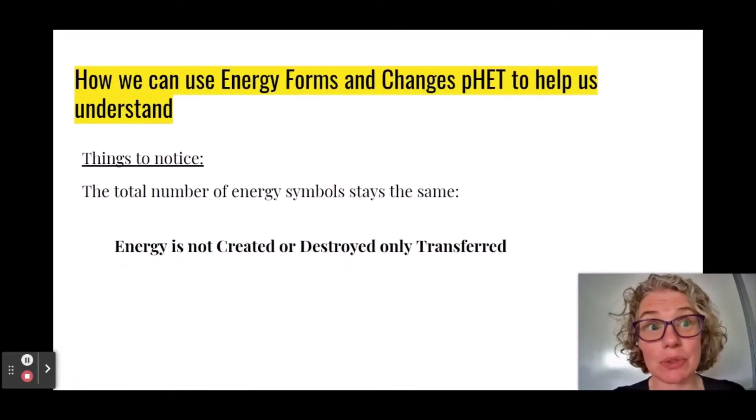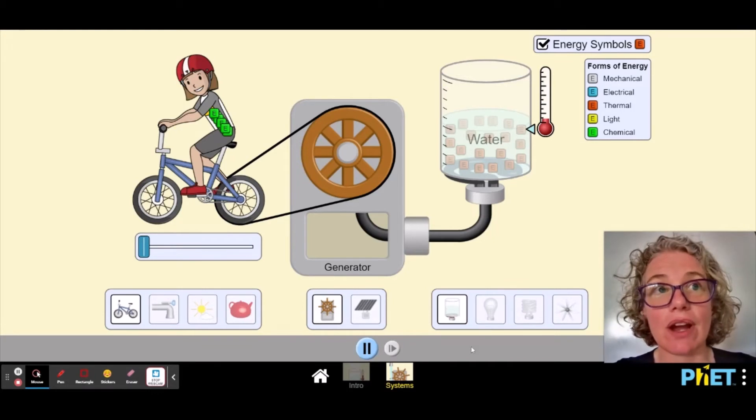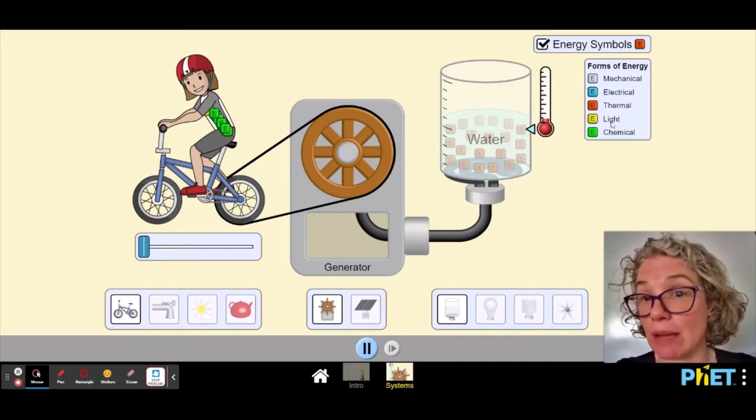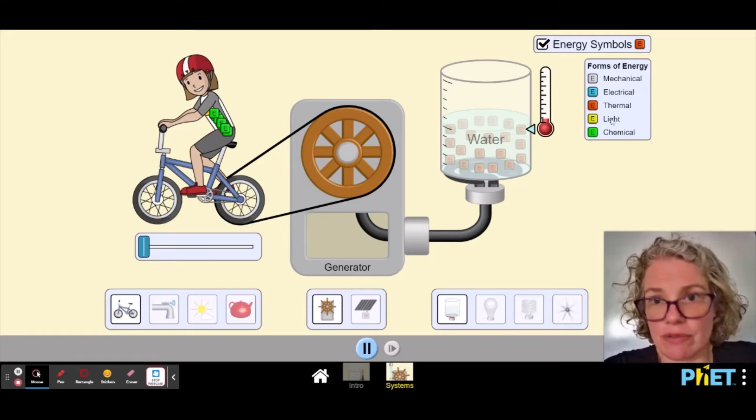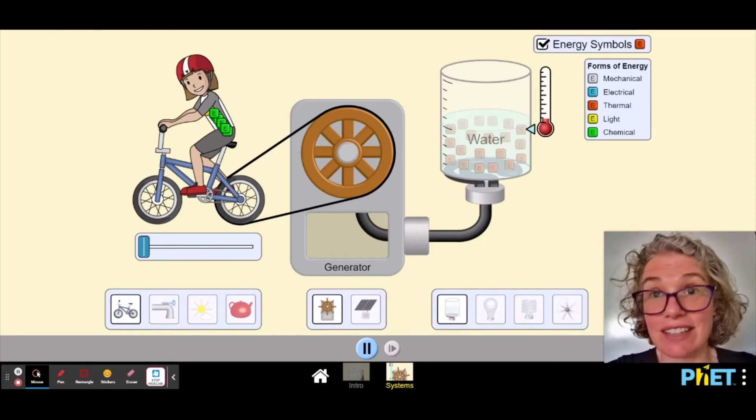All right, we're going to switch to an animation here in a moment. A couple things I want you to notice is that energy is not created or destroyed, and the total number of energy symbols stays the same throughout. Okay, so here we are on an animation produced by PhET. And we're going to see a lot of the vocabulary words we just talked about. Nuclear is not listed, because nuclear is very rarely used, unless we're talking about the starting energy of the sun. And we're going to see these symbols being used.